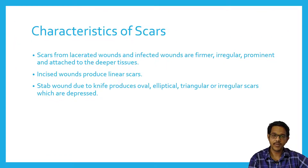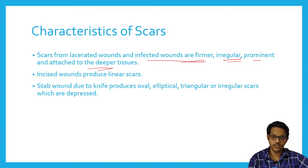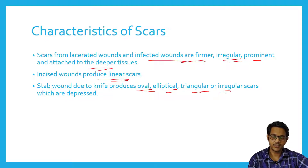Now coming to characteristics of scars. Scars from lacerated wounds caused by blunt weapons and infected wounds are firmer, irregular, and pigmented, and attached to deeper tissues. Since they are caused by blunt weapons, they are irregular in shape. Incised wounds caused by sharp weapons produce linear scars. Stab wounds caused by a knife produce oval, elliptical, triangular, or irregular scars, which are usually depressed below the surface.